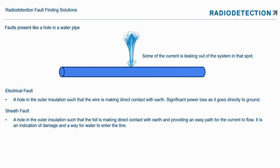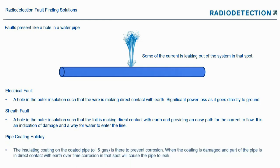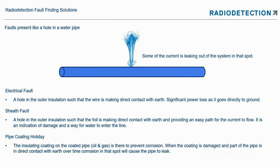A sheath fault is also an indication of damage allowing water to enter the line, though we won't have any direct electrical contact with ground — but you will be able to find this by connecting a transmitter to it. A pipe coating holiday is where the insulated coating on a pipeline, mainly in the oil and gas industry, is damaged. It's used in conjunction with cathodic protection, and when damaged, that part of the pipeline is in direct contact with earth, which can lead to corrosion — and we don't want corrosion on high-pressure oil and gas pipelines.